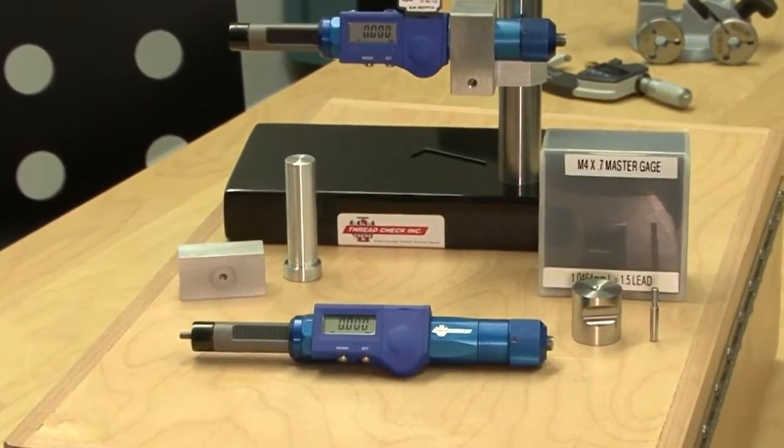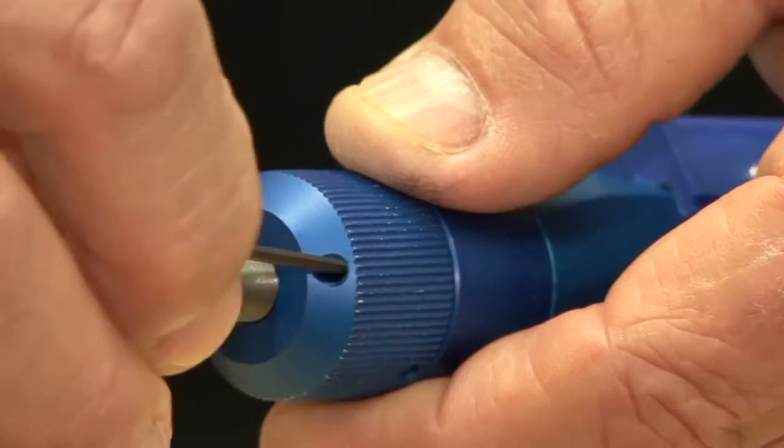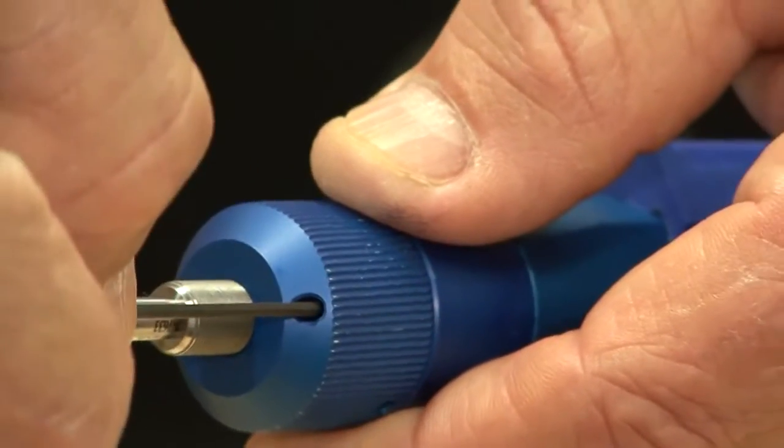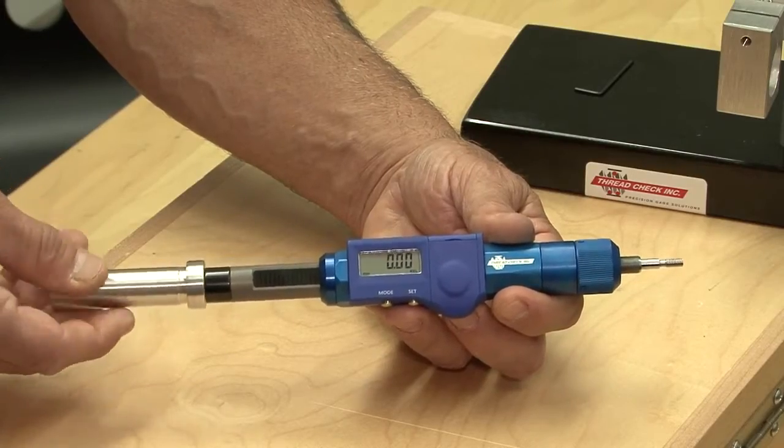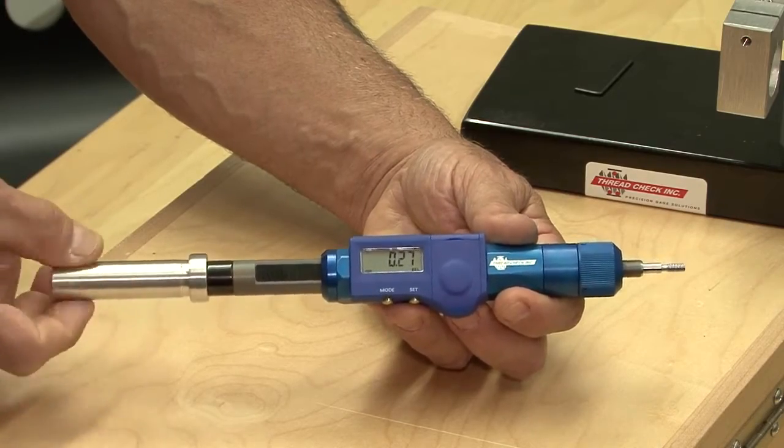The digital thread depth gauge can be used two different ways. The operator may choose to lock the setting screw on the back portion of the knurled knob, which will allow the part to rotate onto the gauge to the correct thread depth.